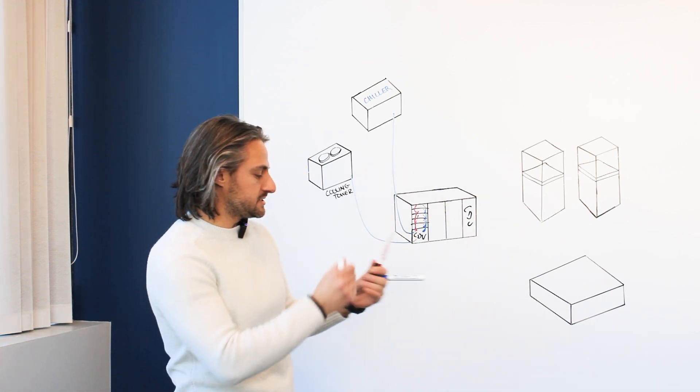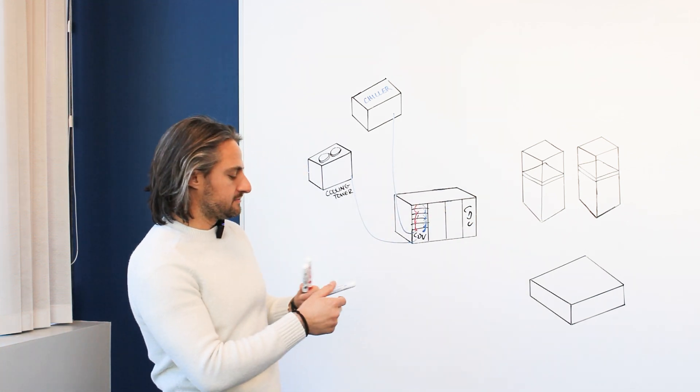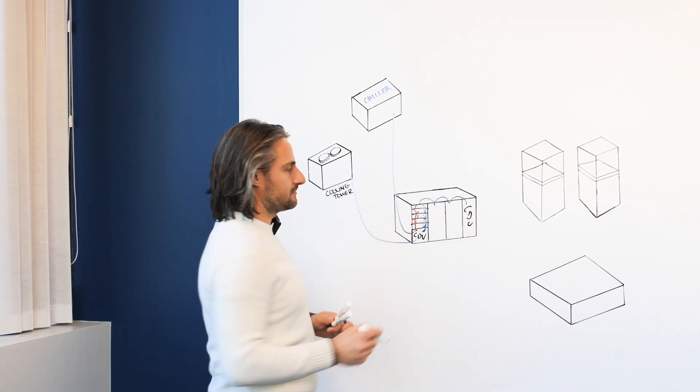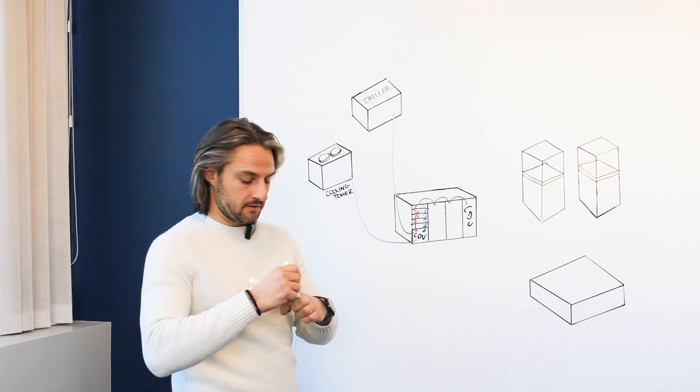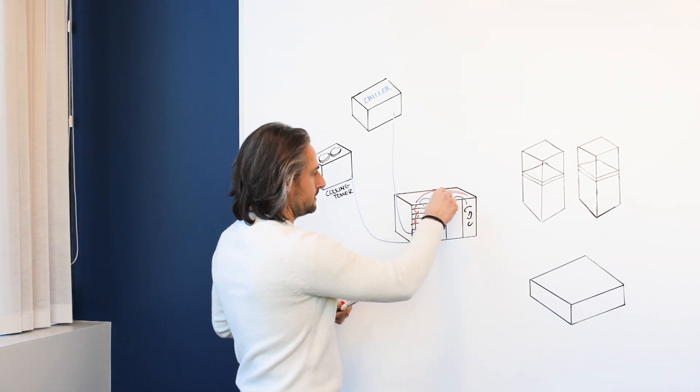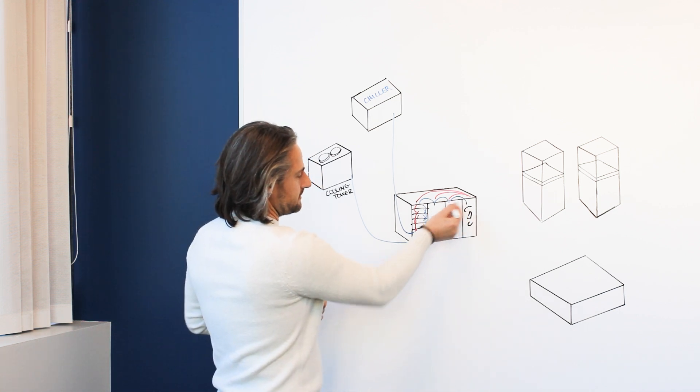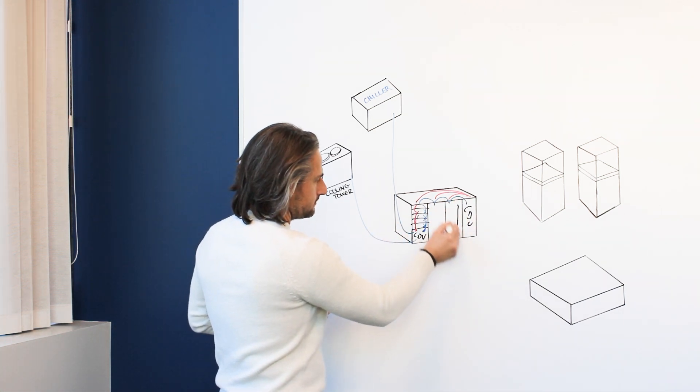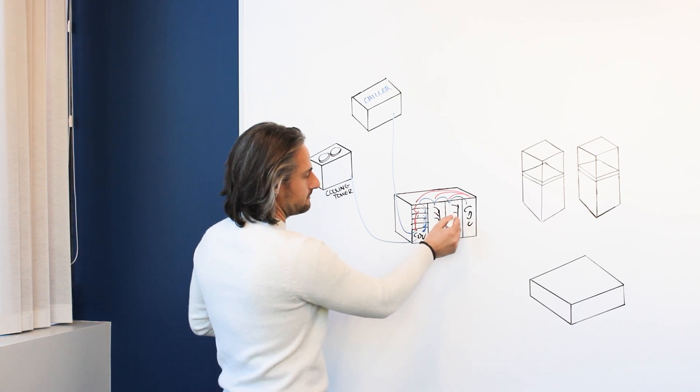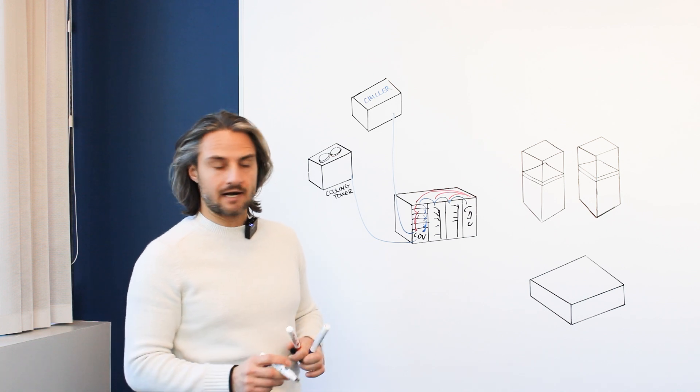So this CDU is doing very similar work to the in-rack, except that now it's distributing coolant to all of the server racks that are in that row, in parallel, and collecting all of the heat from each of those server racks coming back. So inside of each rack, we then have a manifold that's distributing the fluid to all the servers that may be in that particular rack.